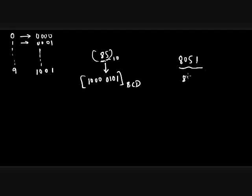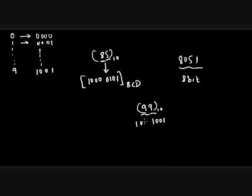In the case of the 8051 microcontroller, we know it is an 8-bit microcontroller — the registers are 8-bit and the maximum number the register can hold is 99. This is because I need 4 bits to represent 9 (1001), and I need 4 more bits to represent another 9 (1001), totaling 8 bits.